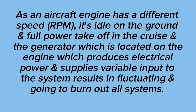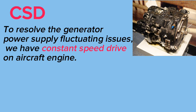As an aircraft engine operates at different RPM speeds — idle on the ground, and full power during take-off and cruise — the generator located on the engine produces electrical power but supplies variable input to the system, resulting in fluctuating power that could burn out all systems. To resolve these generator power supply fluctuating issues, we have the constant speed drive.